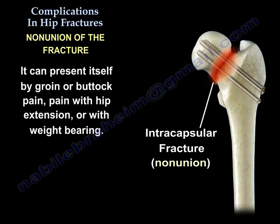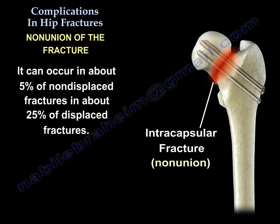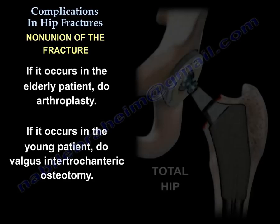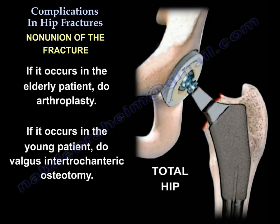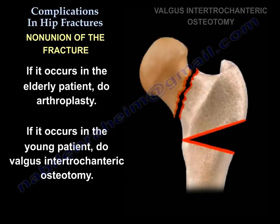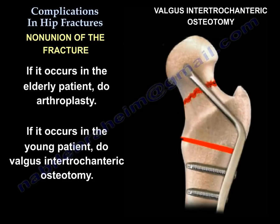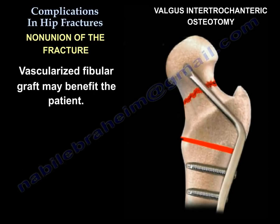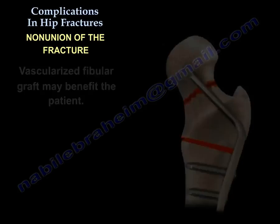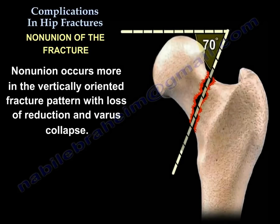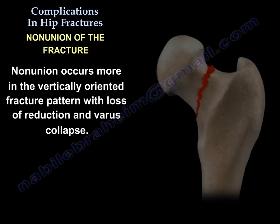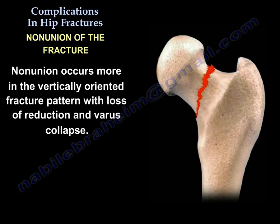Nonunion can present with groin or buttock pain, pain with hip extension or with weight bearing. It occurs in about 5% of non-displaced fractures and about 25% of displaced fractures. In an elderly patient, you will do arthroplasty. In a young patient, you will do valgus intertrochanteric osteotomy. Vascularized fibular graft may also benefit the patient. Nonunion occurs more in vertically oriented fracture patterns with loss of reduction and varus collapse.